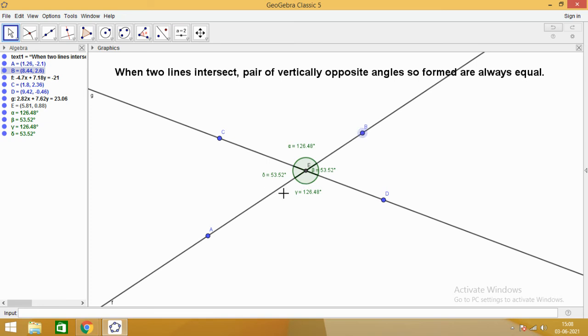In the beginning, I mentioned that all the four angles, they are around the point E. So let us see what is the sum of these angles and we know that sum of angles around the point is 360 degrees. So let us verify this. So we have to add alpha, then we will be taking beta, then we will be taking the third angle that is gamma plus, you see in the input box, we have written sum is equal to alpha plus beta plus gamma plus delta. Click enter. You see that sum is 360 degrees. Isn't it interesting?